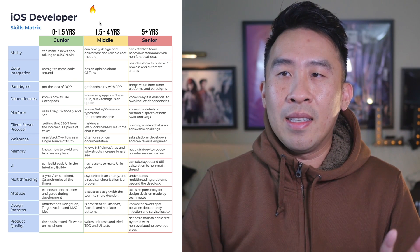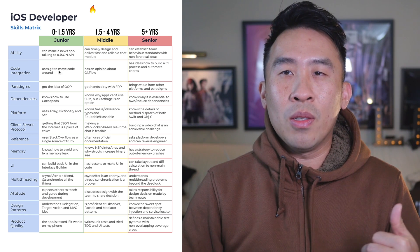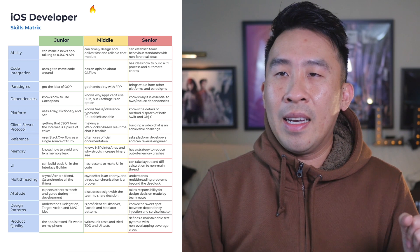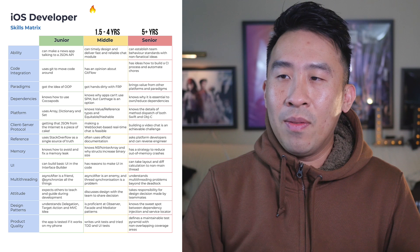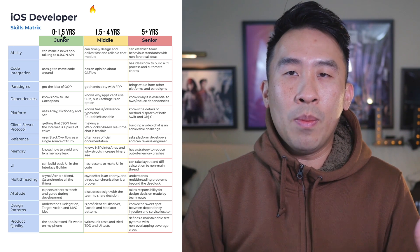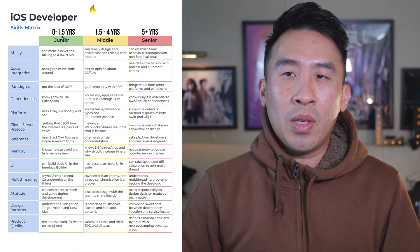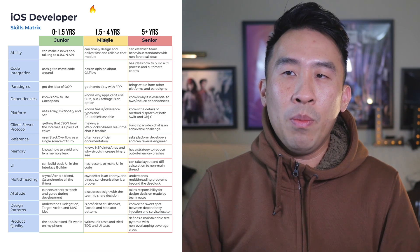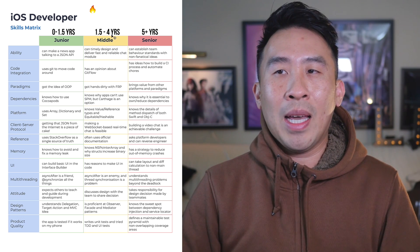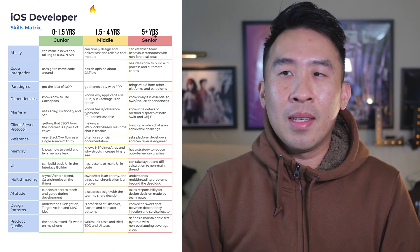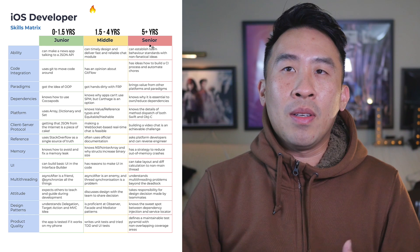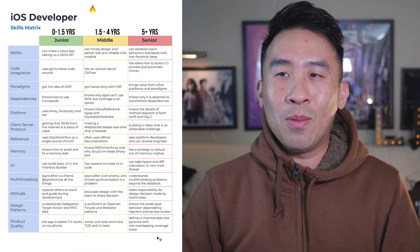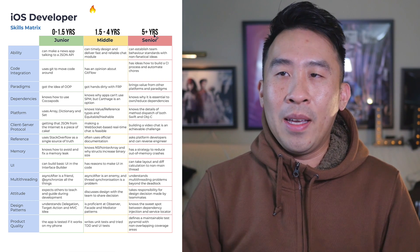The thing that is not on the original skills matrix is how I define what a junior, mid, and senior level developer is. My definition of a junior developer is someone with 0 to 1.5 years of professional experience, working on the job eight hours a day or more. For a mid-level engineer, 1.5 to 4 years is what I would expect. Anything above 5 years is what I would consider a senior level developer — for example, an architect or iOS lead developer.